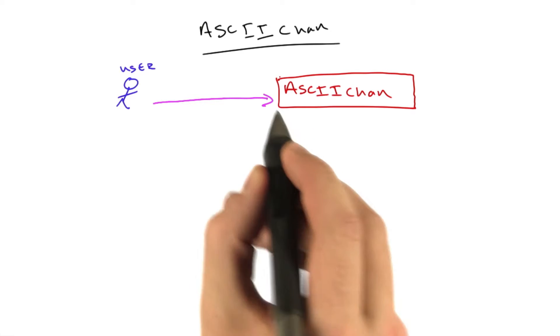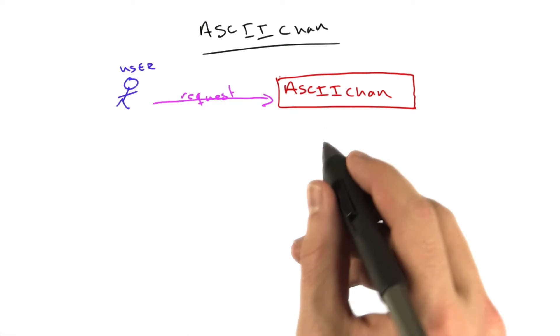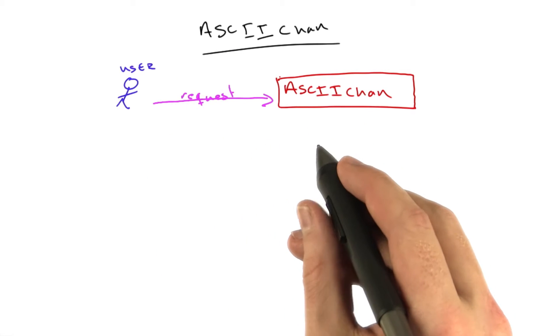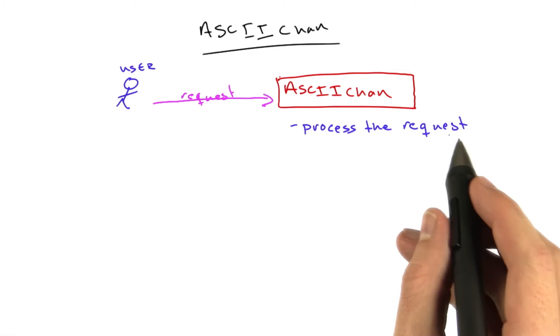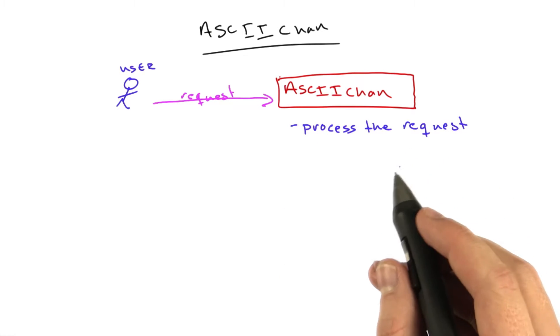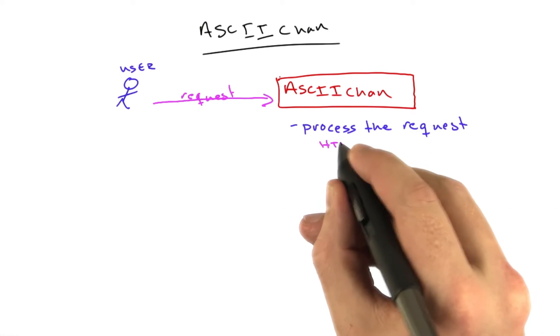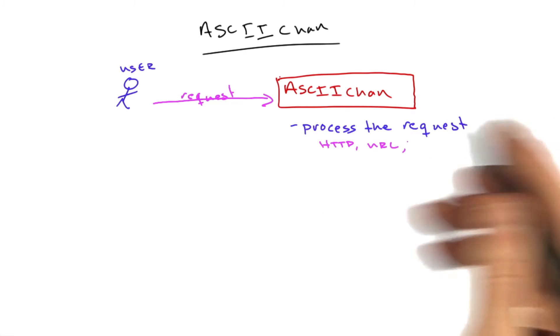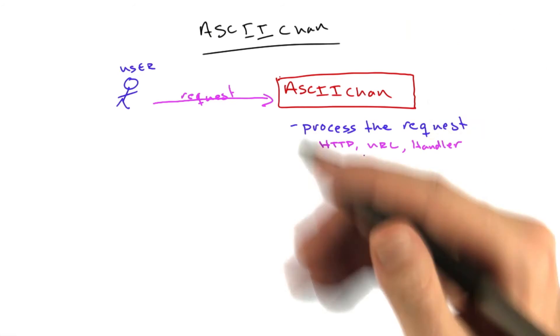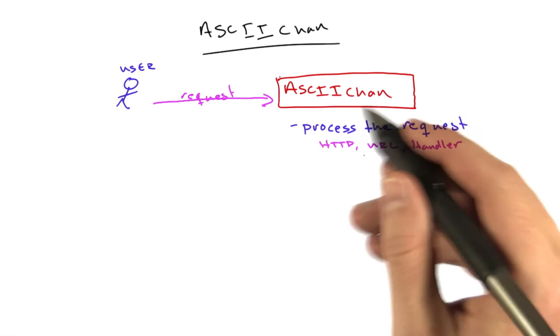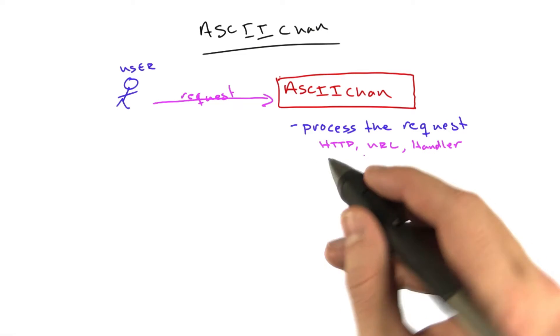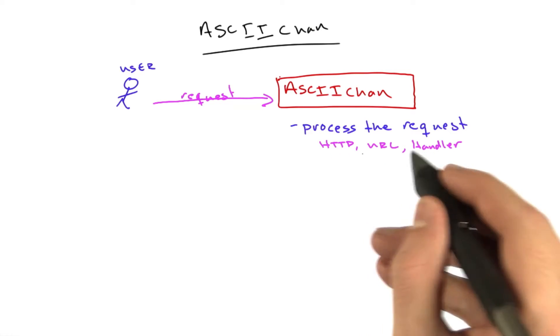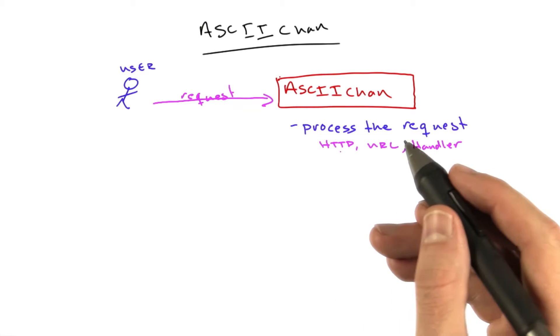We can make it better. When a user makes a request to ASCII-CHAN, we have to do several things. First, we process the request—parsing the HTTP, parsing the URL, doing the URL mapping to the right handler, all that overhead before our program actually starts to run, figuring out what we're going to do with this request. That takes some time.